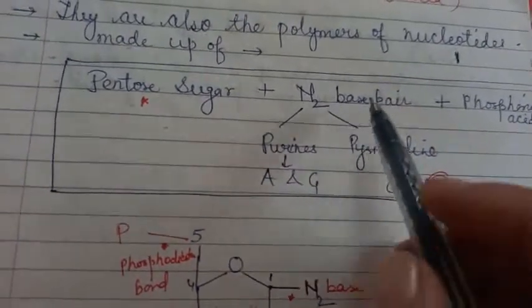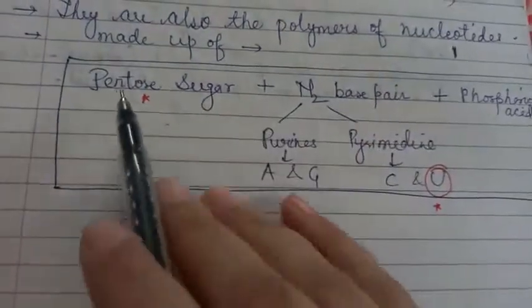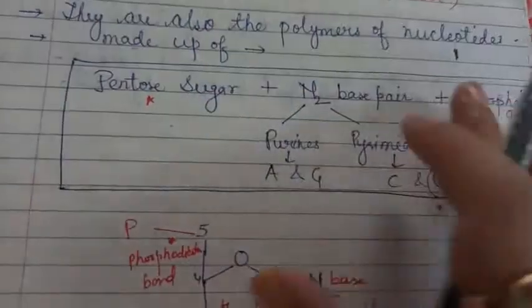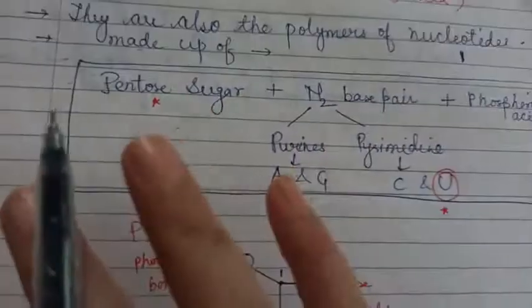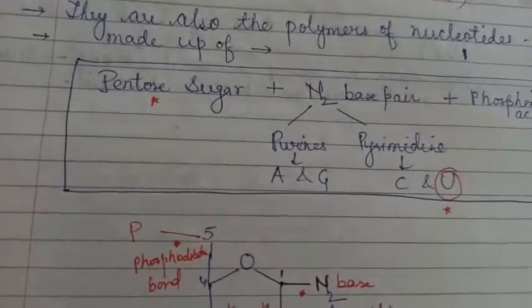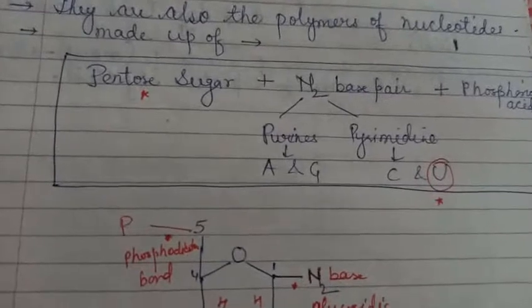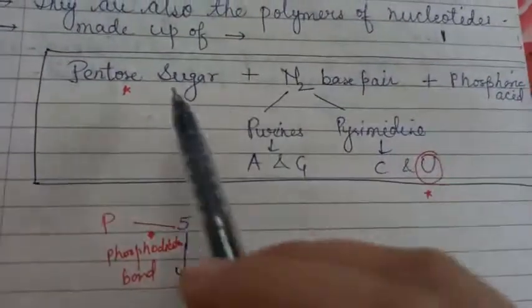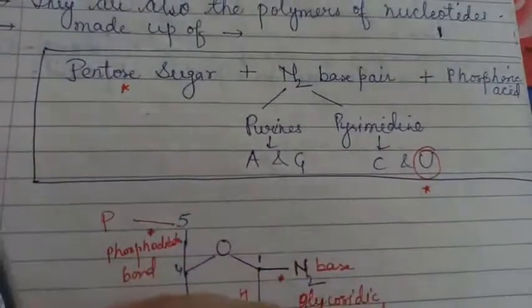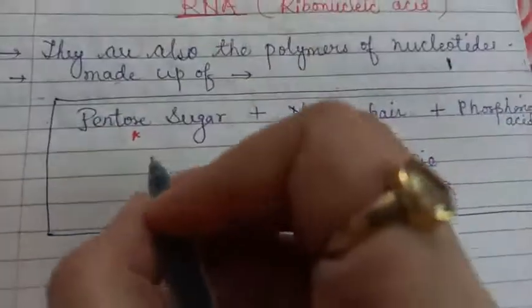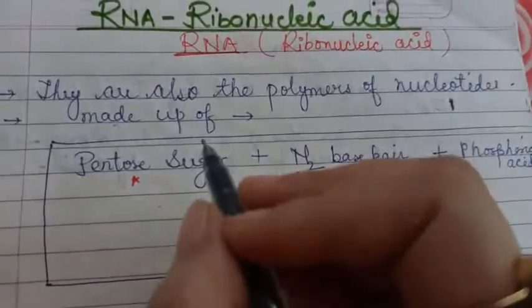DNA and RNA differ only in one respect. This formula or this kind of box you have seen in the previous video when we were studying DNA. There also the same pentose sugar was there, but in the DNA it is deoxyribose sugar.